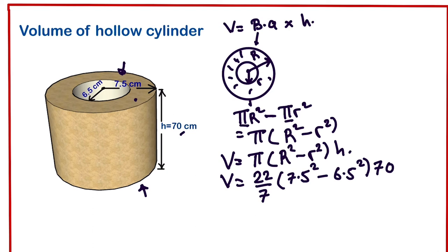If we continue, we are going to have 22/7. This will give us 7.5 squared is 56.25, minus 6.5 squared is 42.25.